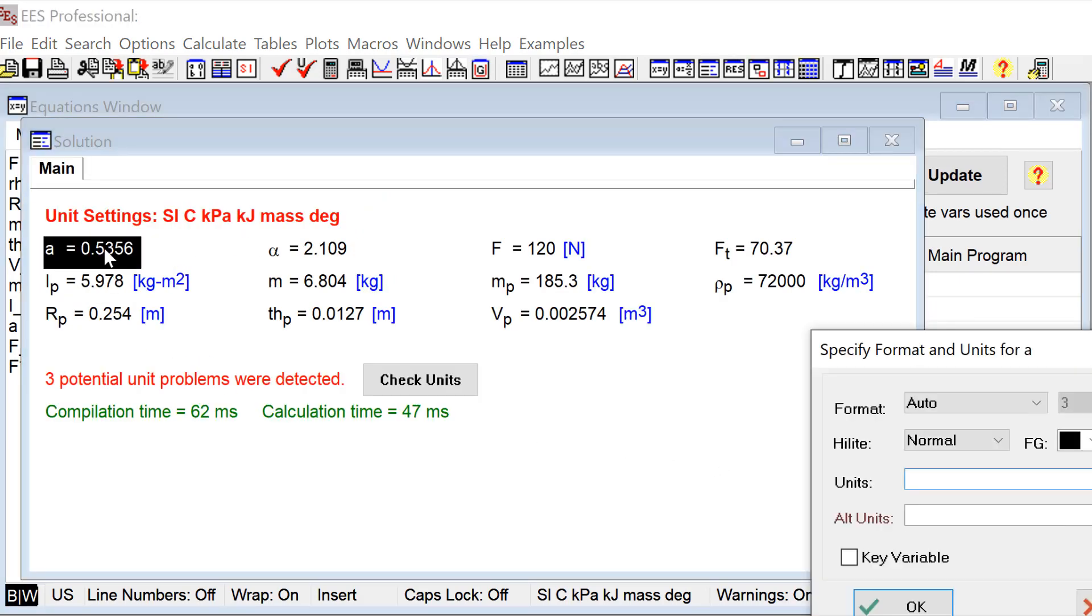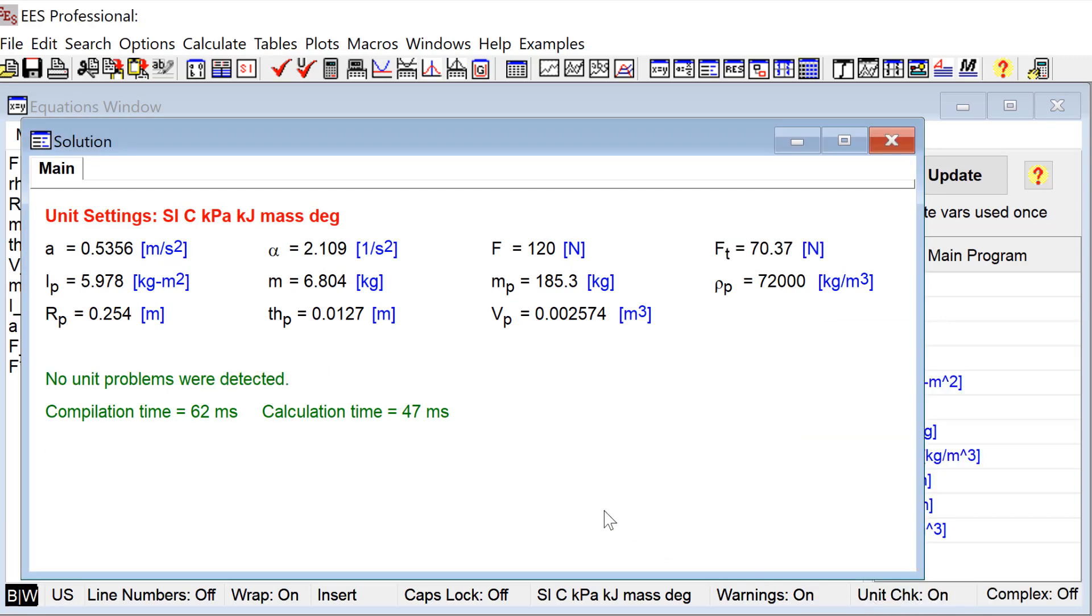Before I take that solution too seriously, I probably ought to set the units of my new variables. So I'm doing that here and making sure there's no unit warnings. There isn't. And based on this solution, you can see the acceleration of the mass right here.